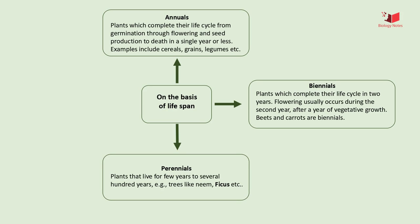A perennial plant, or simply perennial, is a plant that lives more than two years. Examples of perennial plants are ginger, banana, thyme, etc.